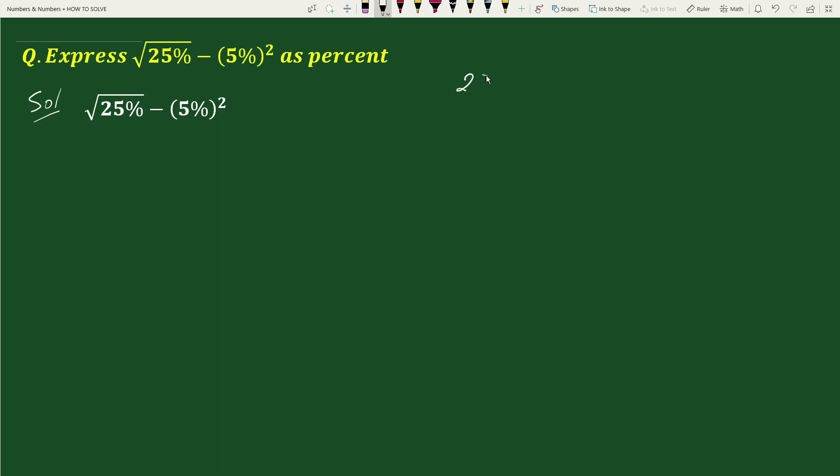We can write 25% as 25 by 100, this equals to 0.25. Similarly,